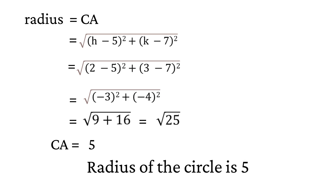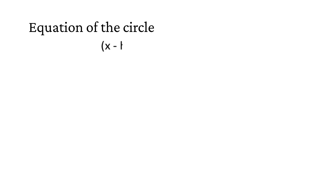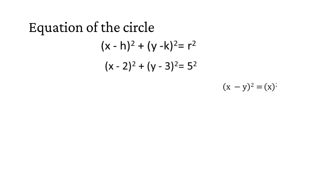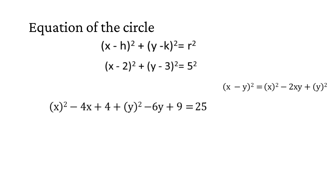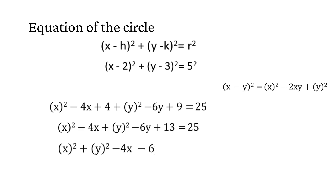Now let us find the equation of the circle. The equation of a circle can be written as (x - h)² plus (y - k)² equals r². After substituting the values of h, k, and r, by using the (x - y)² formula we can further expand. By solving and rearranging the terms, we get the equation of the circle as x² + y² - 4x - 6y - 12 = 0.